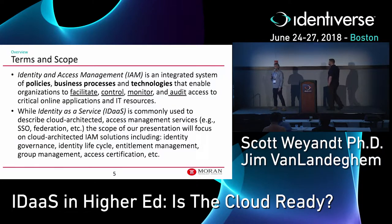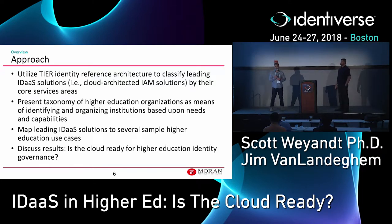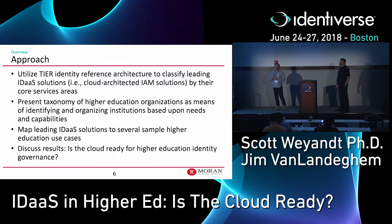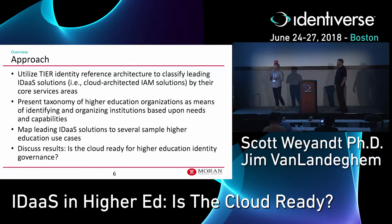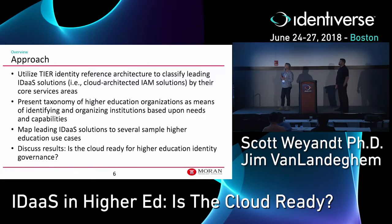Our approach: we're going to use the Internet2 TIER identity reference architecture, which is a fairly common architecture referenced in the higher education space, to describe and outline the core identity and access management services. We'll use that reference architecture as a way to align current IAM vendors — particularly cloud-architected solutions — to that reference architecture.